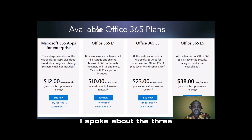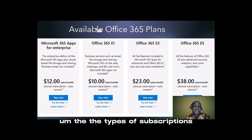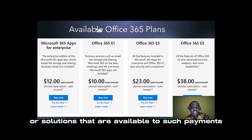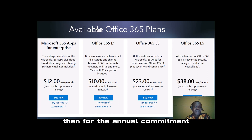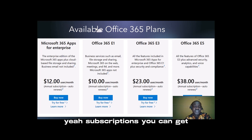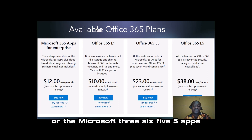For the monthly commitment payment and the annual commitment monthly pay, the types of subscriptions available are Microsoft 365 Business Basic, Business Standard, and Business Premium. For the annual commitment annual payment, the subscriptions you can get are the enterprise solutions like Office 365 Enterprise, Microsoft 365 Enterprise, or Microsoft 365 Apps for Business Enterprise.